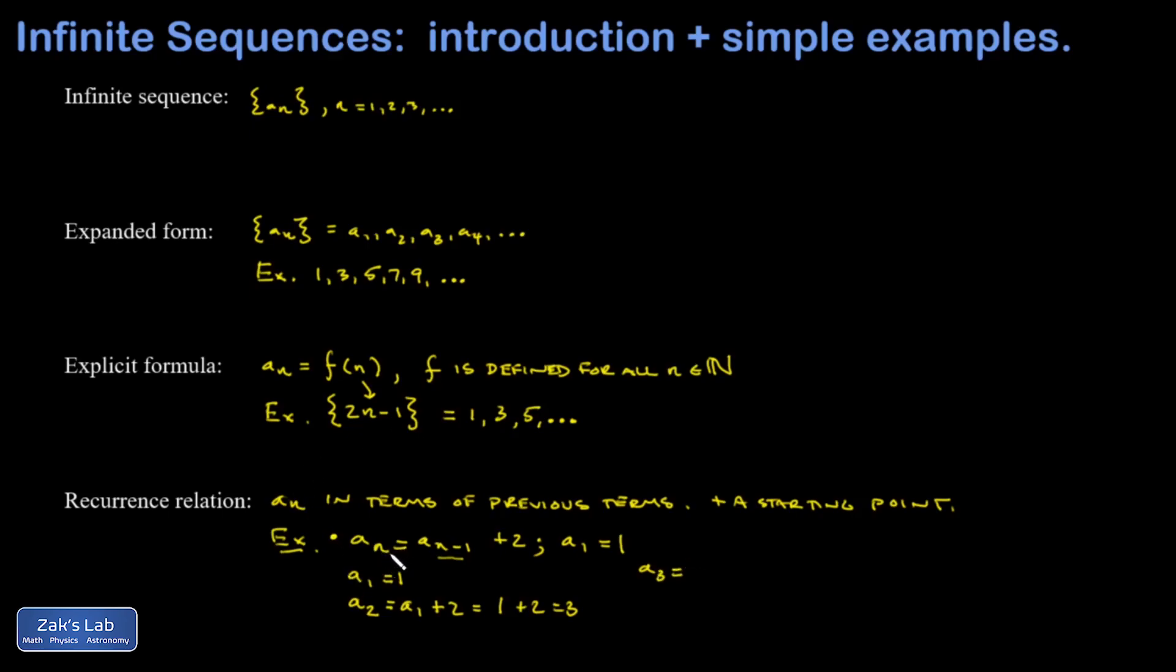By subbing in n equals three into the recurrence relation, I get a2 plus two. But I just figured out a2, and that's three, so I have three plus two, and I get five. And you might see the pattern now, but I'll just go ahead and get the fourth term. You would sub in n equals four in the recurrence relation and I get a3 plus two. And I already have a3, that's five, so five plus two, and I get seven. And it looks like we have the exact same sequence we've been working with in every example in this video.